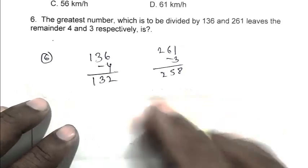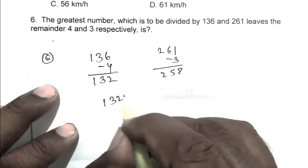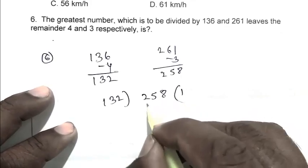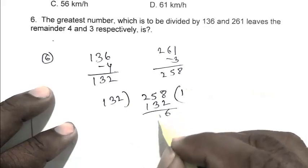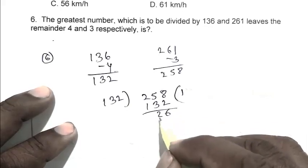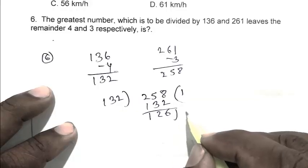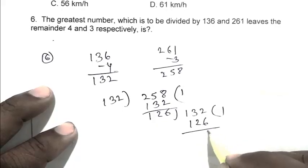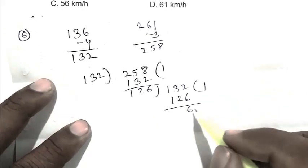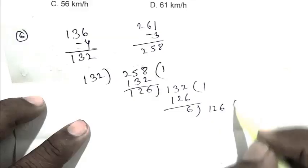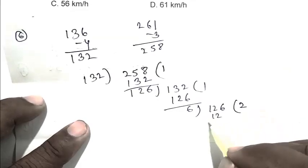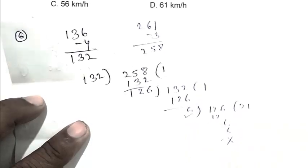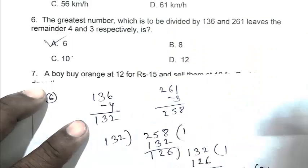We calculate the HCF of 132 and 258. 258 divided by 132 goes 1 time, remainder 126. 132 divided by 126 goes 1 time, remainder 6. 126 divided by 6 goes exactly, so HCF is 6. A is the right answer.